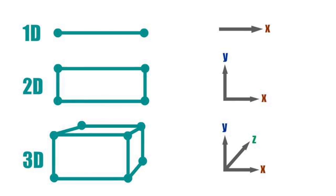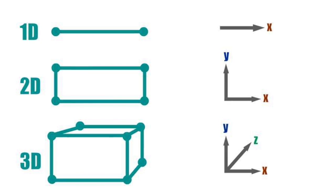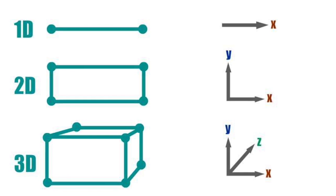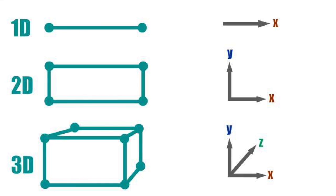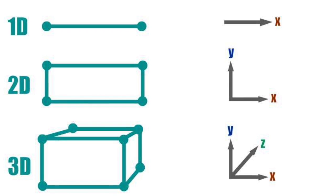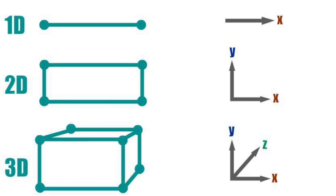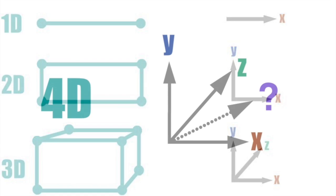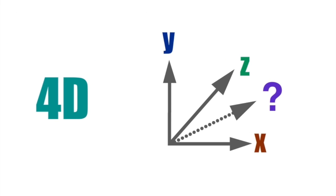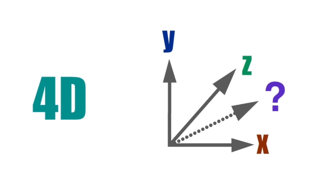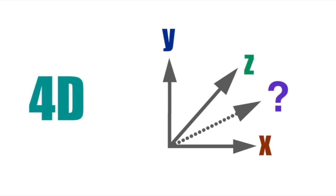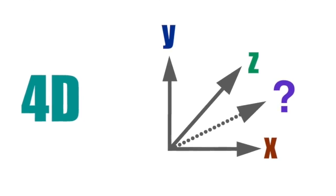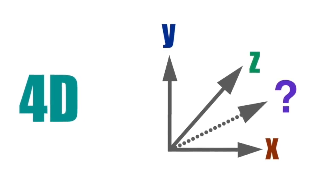As you know, one spatial dimension has one axis, two spatial dimensions have two axes, and three spatial dimensions have three axes. What about four spatial dimensions? We need another axis. The question is where we should add this additional axis.